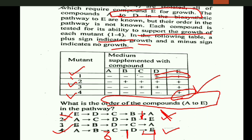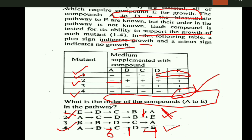In the case of mutant 2, there is no growth in compound A. This suggests that compound A is placed in the pathway before mutant 2. In the case of B, C, D, and E, there is growth, so compounds B, C, D, and E are placed after mutant 2. That's why option 4 is the right answer. For more information, you can watch the first part of this video — I will provide the link in the description box.